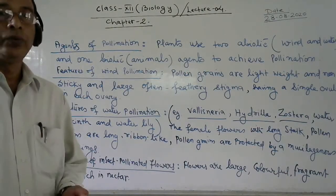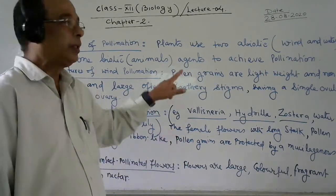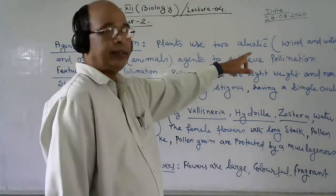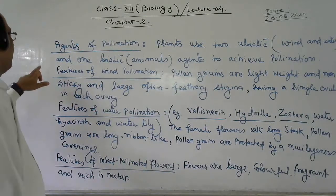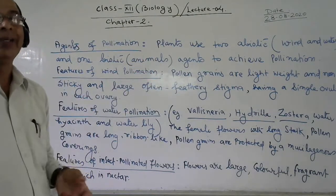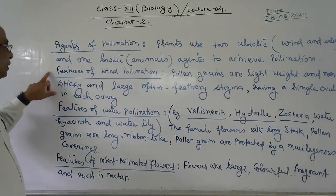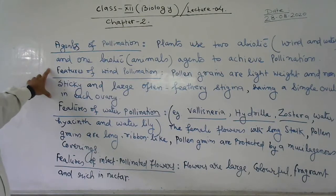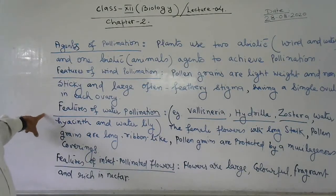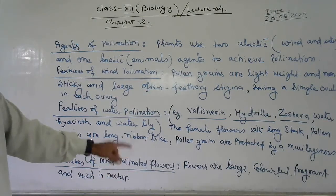Now we will discuss the agents of pollination. There are two different types of agents — abiotic agents and biotic agents. Abiotic agents include wind and water, which have no life at all. Biotic agents include animals, especially insects, which act as pollinating agents for flowering plants. Types include wind pollination (anemophily), water pollination (hydrophily), and pollination by insects.